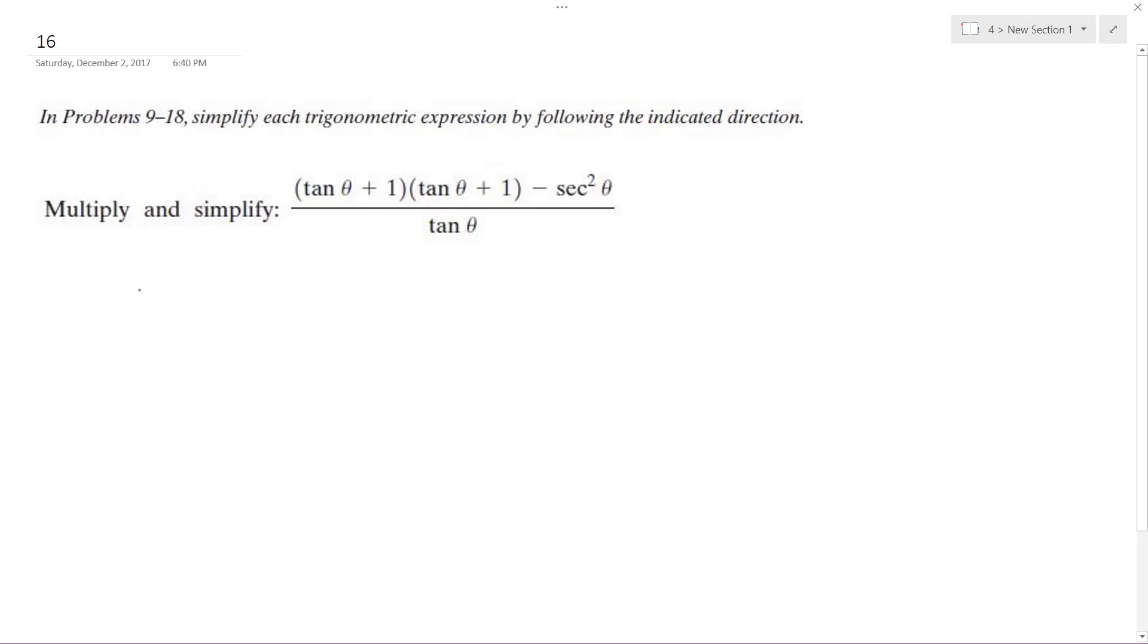So first thing I'm going to do, tangent times tangent, so that makes me tangent squared theta. I get plus tangent theta, plus tangent theta, and then plus one, minus secant squared theta, all over tangent theta.